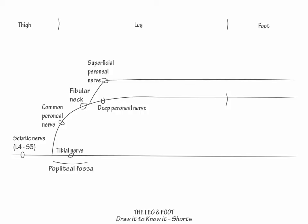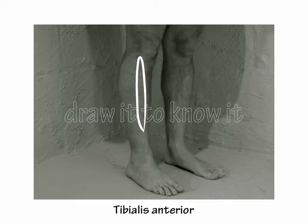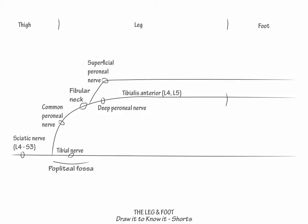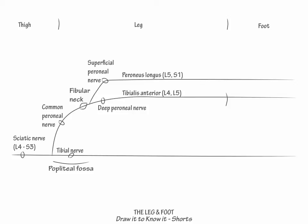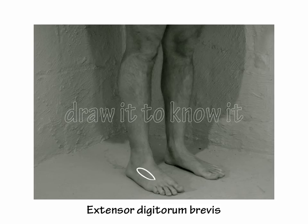Let's show a few key perineal innervated muscles. Show that the deep perineal nerve innervates tibialis anterior, L4 to L5, which provides foot dorsiflexion. Then show that the superficial perineal nerve innervates peroneus longus, L5 to S1, which provides foot eversion. Also show that the deep perineal nerve innervates extensor digitorum brevis, L5 S1, which extends the middle three toes.